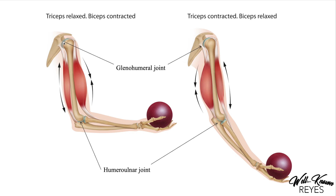The origin of the biceps brachii is at the supraglenoid tubercle, and the insertion is at the forearm. Muscles overlaying the scapula and shoulder — such as the deltoids, rotator cuff, traps, and rhomboids — fixate on top of that origin. They stabilize it so that instead of pulling the origin out of place, the only movement you see is the forearm and hand coming up.